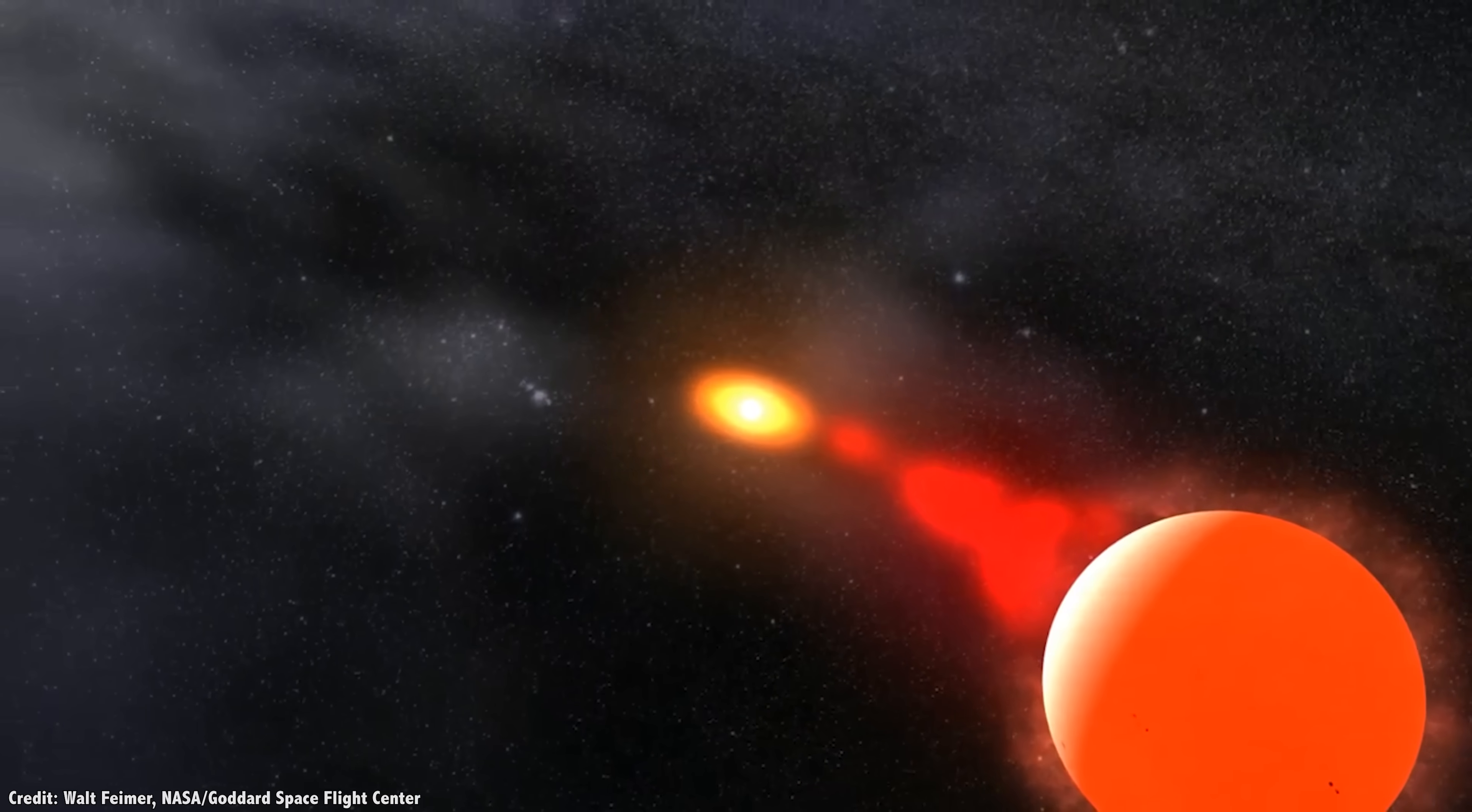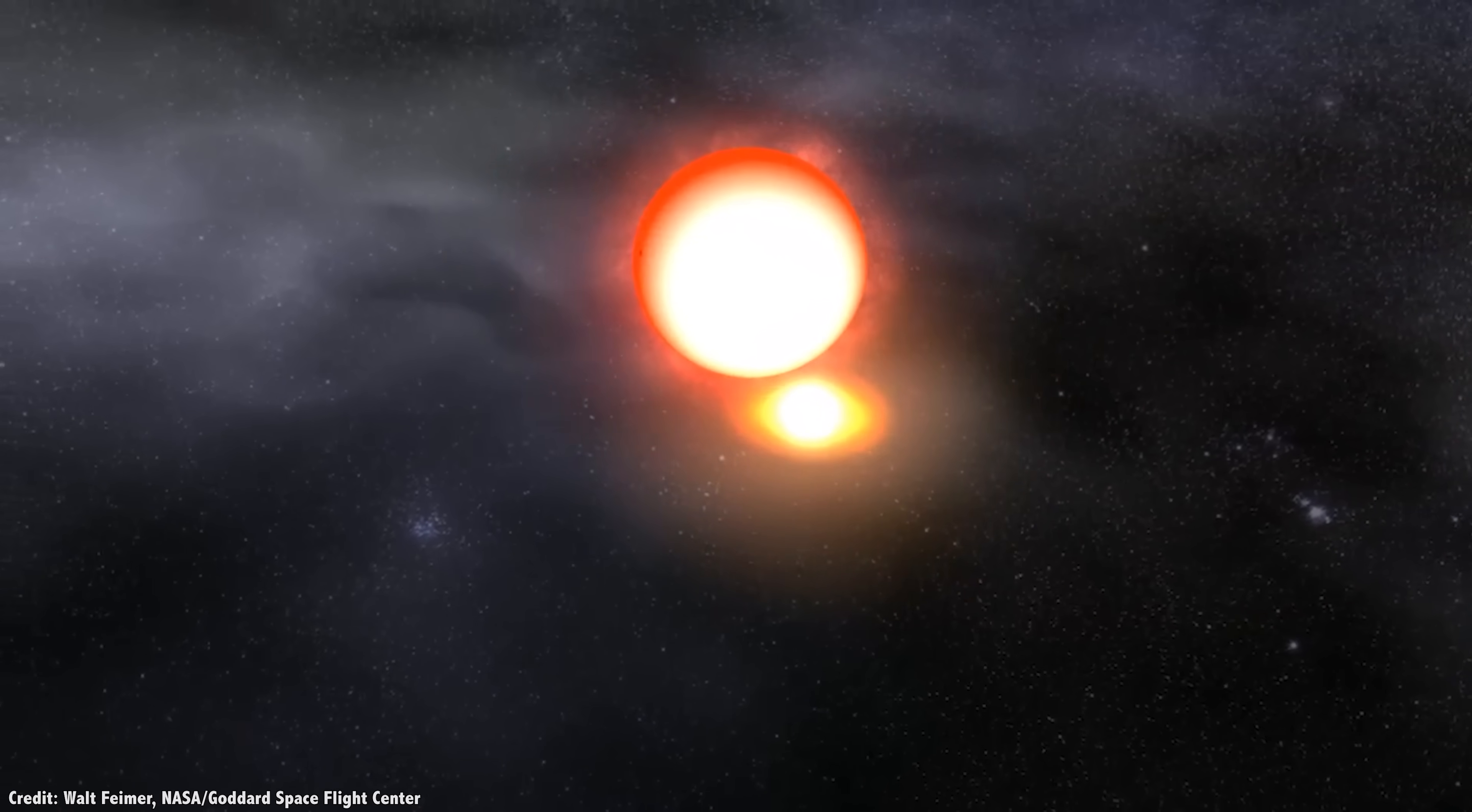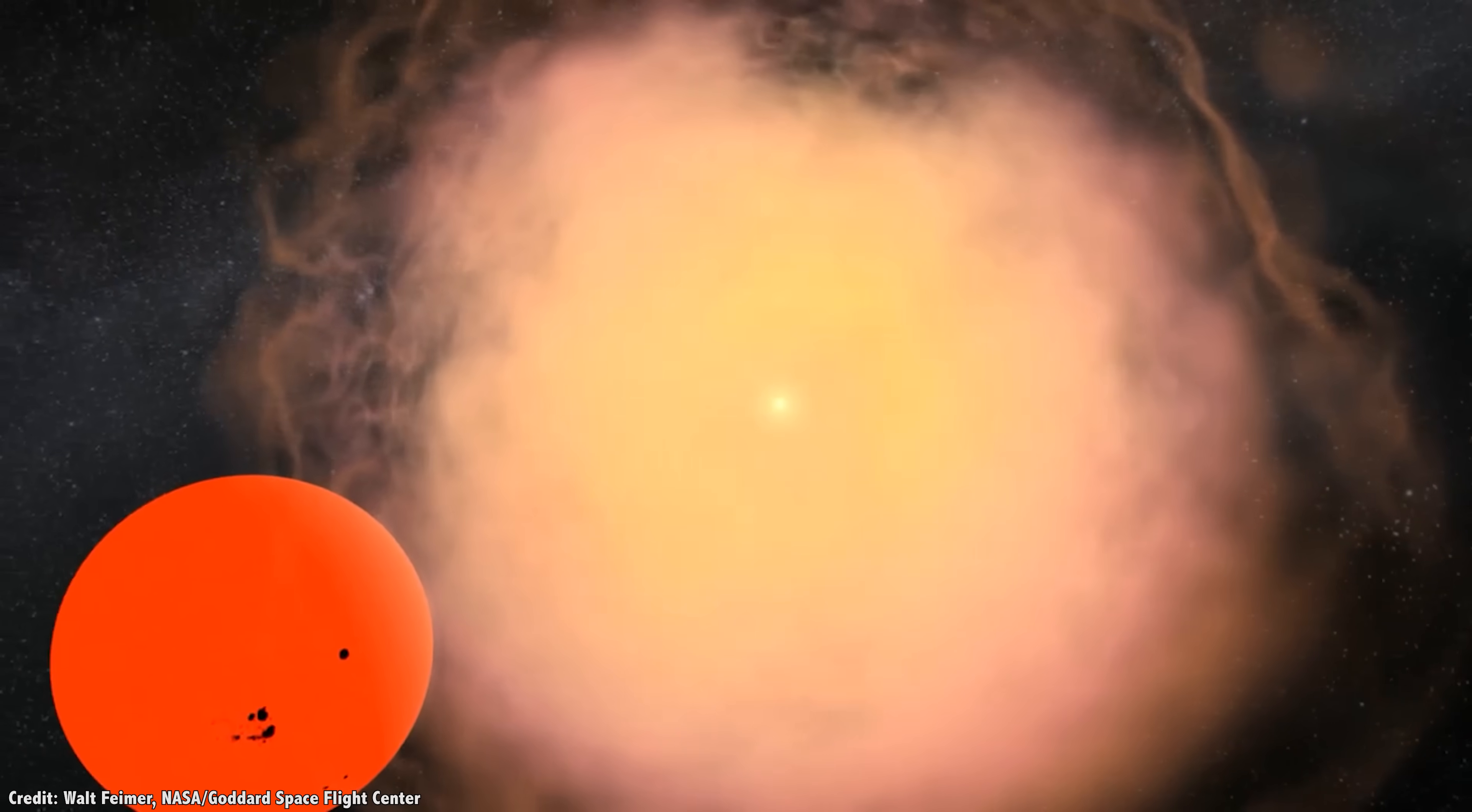The white dwarf is made almost entirely of carbon, and when it reaches this point, the entire object undergoes carbon fusion instantly. This is the Type Ia supernova.